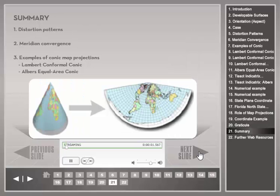This slide summarizes the presentation. It started with an introduction to distortion patterns of conic map projections, where distortions are smallest near the lines of tangency or intersection. Next, meridian convergence was explained, which varies across the map. Finally, this module showed conic projections commonly used to map the entire US, or used in the state plane coordinate system to map its zones.